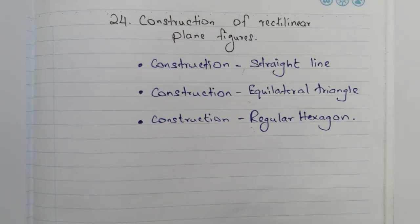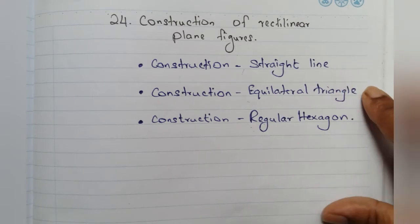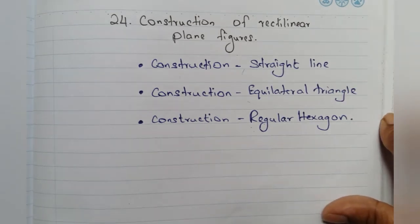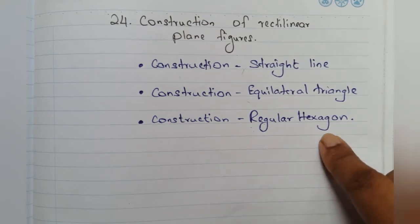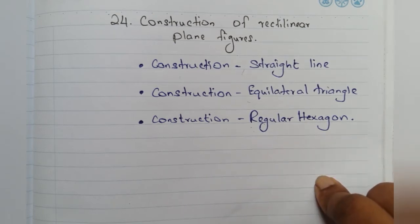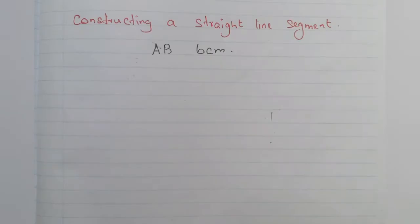Hello, my dear children! Welcome back to my channel — happy learning mathematics. Today we will be learning the 24th lesson, which is construction of rectilinear plane figures. Under this lesson we will be covering three main topics: construction of a straight line segment, constructing an equilateral triangle, and constructing a regular hexagon, which will be learnt in two methods.